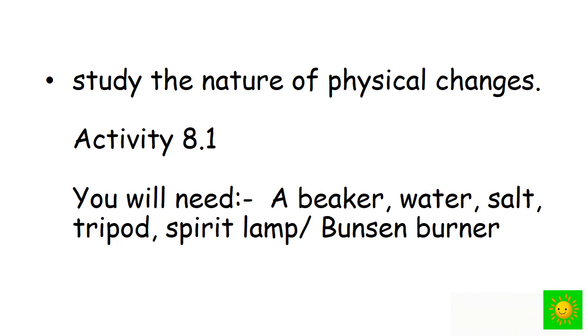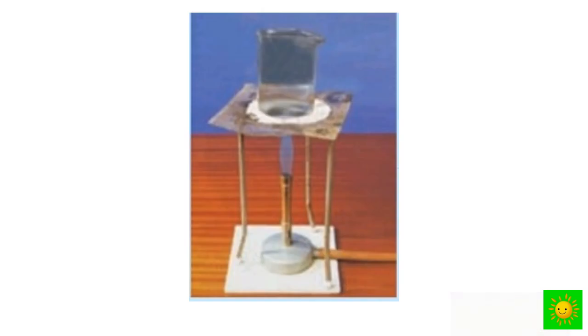Let's study the nature of physical changes. We have to do an activity using a beaker, water, salt, tripod, and spirit lamp or Bunsen burner. Take a 250 ml beaker and add about 50 ml of water into it. Add about 1 tablespoon of powdered salt and dissolve thoroughly. Keep a wire gauge on the tripod and place the beaker on it. Heat the beaker using a spirit lamp or Bunsen burner until water is completely vaporized.